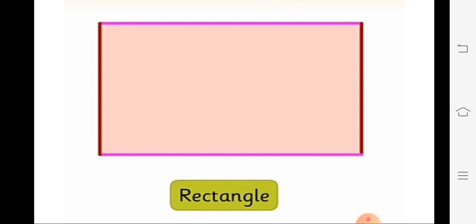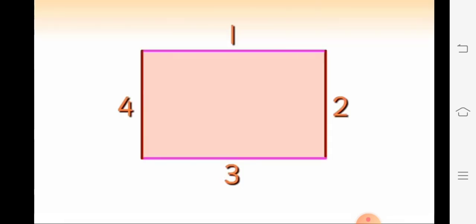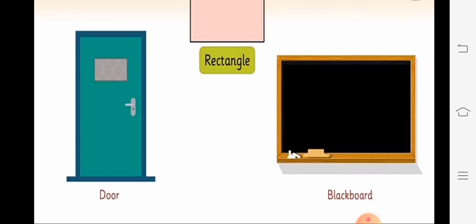Next is rectangle. Students, rectangle mein dekho kitne sides hote hain? Four sides — one, two, three and four. Yeh jo four sides ki jo length hoti hai, equal hoti hai, ek dusre se equal hoti hai. See examples of rectangle shapes: the first one is door. Darwaze ka shape kaisa hota hai? Rectangle ka hota hai — aapne dekhe honge apne gharon mein door, uska shape rectangle ki tarah hota hai. And classroom mein dekhenge blackboard — blackboard ka shape bhi rectangle ka hota hai.